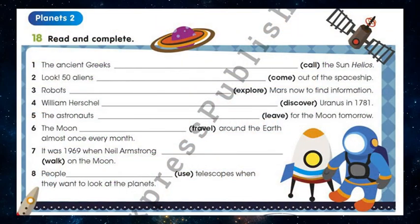Our next exercise is Exercise 18 on page 107. You should read and complete. You should put these verbs in past simple, present simple, or present continuous.